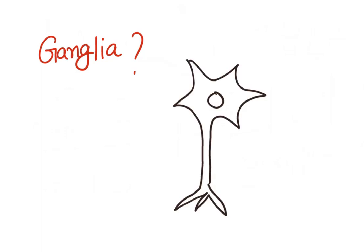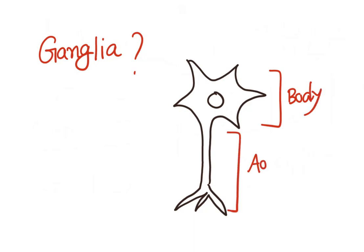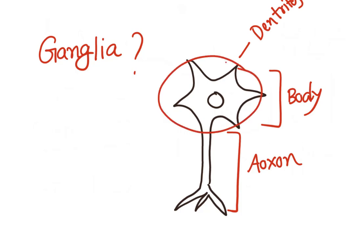A ganglia is a collection of nerve cell bodies outside the CNS. A neuron has three parts: the body, the axon, and many dendrites. If we have a collection of these cell bodies outside the CNS, it is called a ganglia.